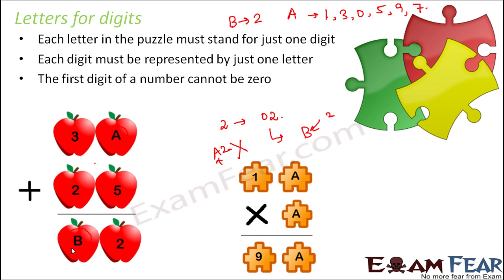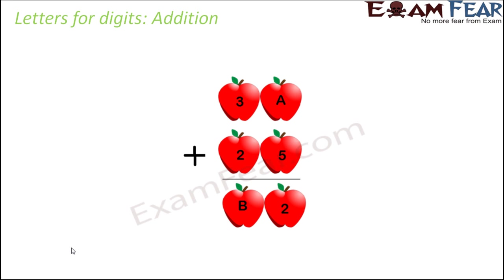In a similar way, you will have addition as well as multiplication puzzles where some of the digits are replaced with letters, and you need to find out the values of each of those letters. Let us first deal with addition. We take this example and see how to solve it. First, we focus on the digits at the units place. So let us focus on this particular column. Here we see that A plus 5 is equal to 2 — that is what this column tells us. The sum of A and 5 should be a number whose units digit is 2.